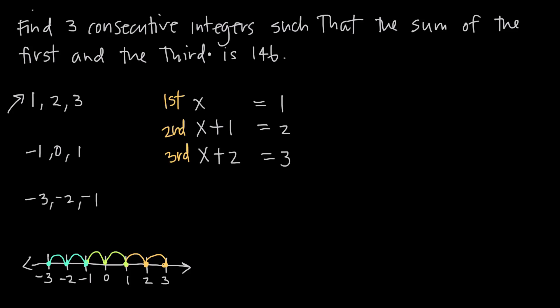What this problem is asking us to do is add the first and the third together and get 146. So we want the sum of the first and the third, which means add them together. We have our first integer, x, and our third integer, x plus 2, so x plus x plus 2. We want to know when this equals 146. Remember, 'is' always means equal, so this equals 146.